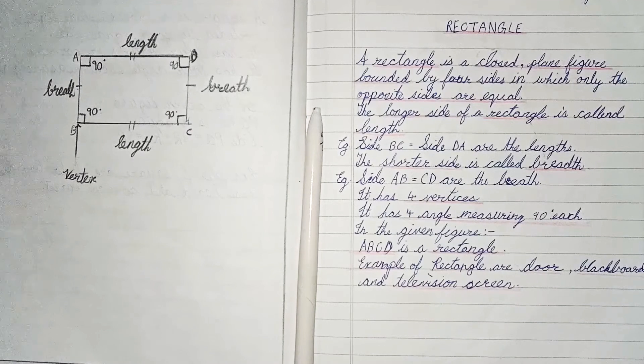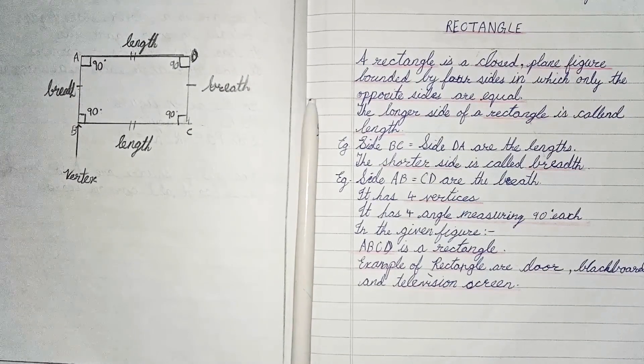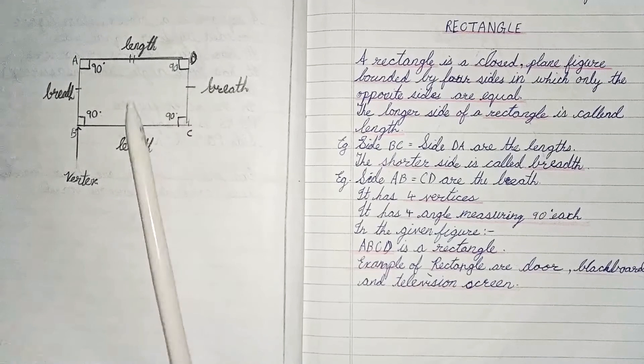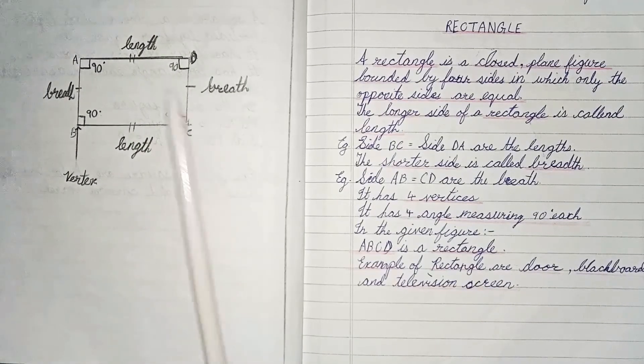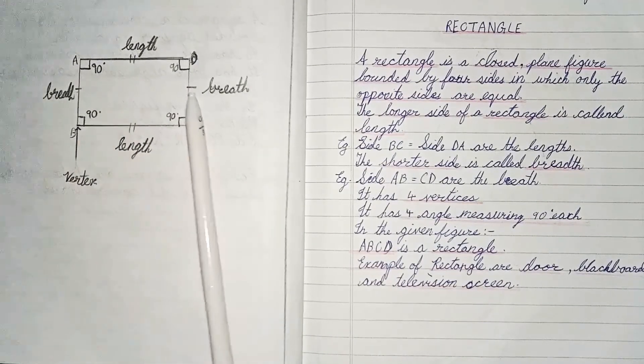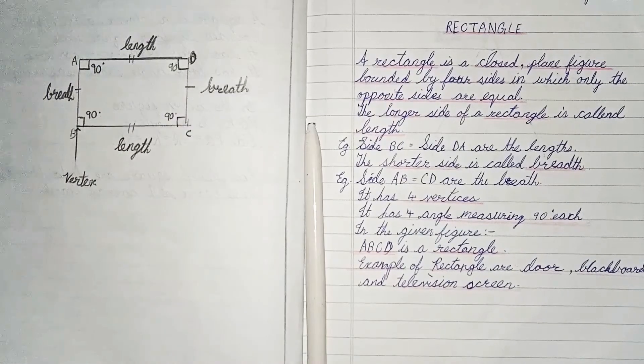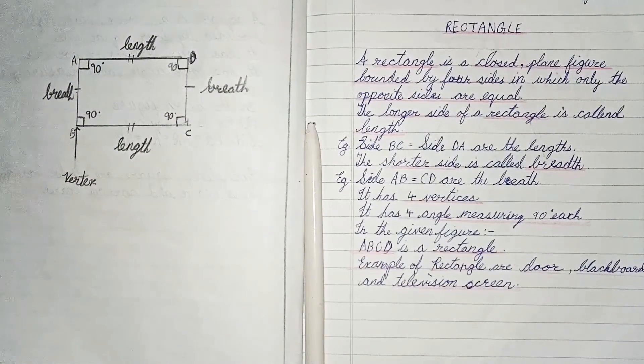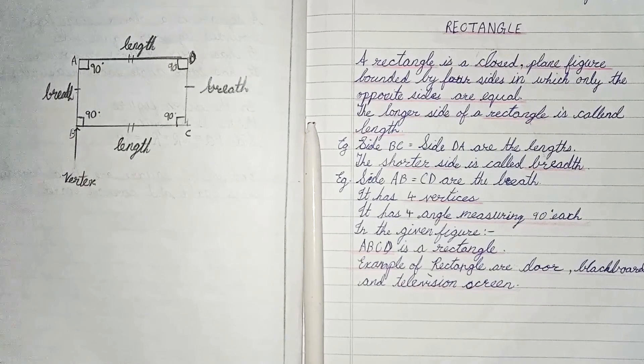Next plane figure is rectangle. A rectangle is a closed plane figure bounded by four sides in which only the opposite sides are equal. The longer side of a rectangle is called length and the shorter side is called its breadth.